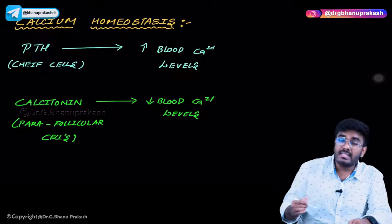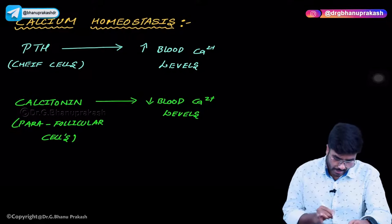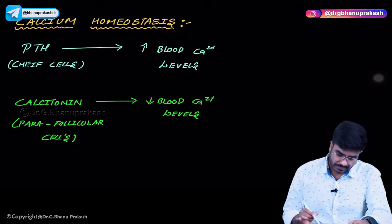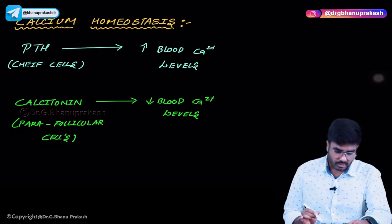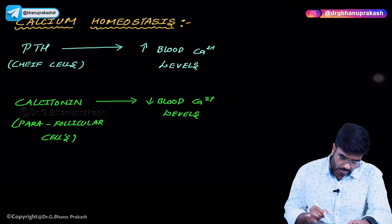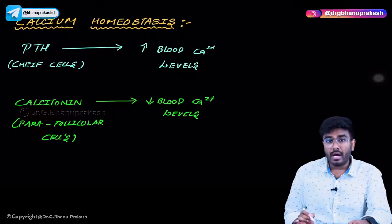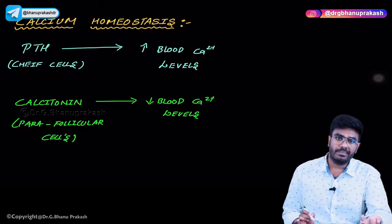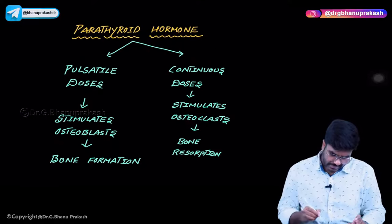The hormone that decreases blood calcium levels is calcitonin, which comes from the parafollicular cells of the thyroid gland. These parafollicular cells produce calcitonin, which decreases blood calcium levels. So we can say parathyroid hormone and calcitonin are antagonistic hormones.